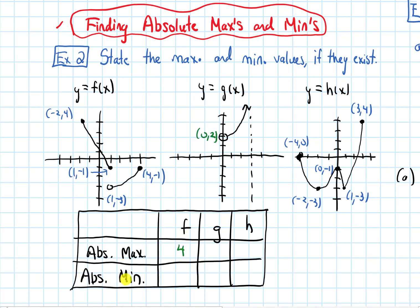The absolute min would be the smallest y value. Looking at the graph, it seems like maybe it's at this hole at (1, −3). But the y values never actually reach that number — they get really close to −3, like −2.9 or −2.99, but never reach exactly −3. So there is actually no absolute min; the y values get close to −3 but never reach it.